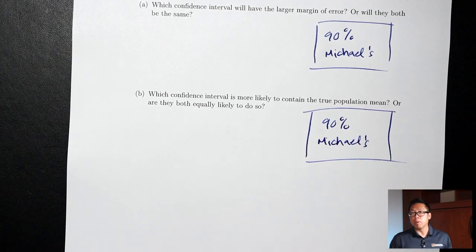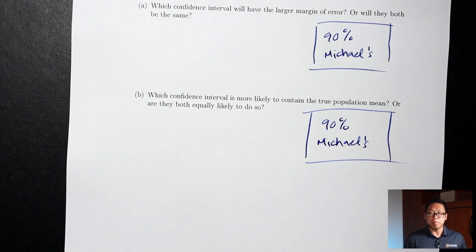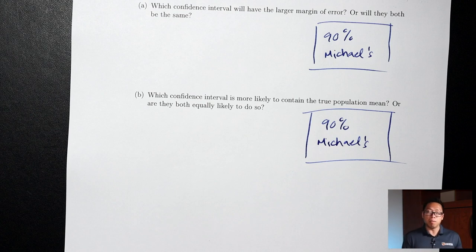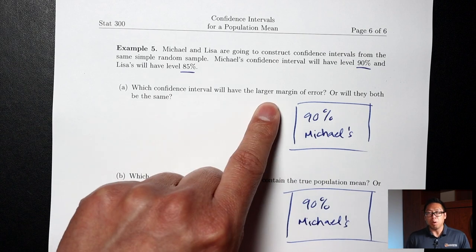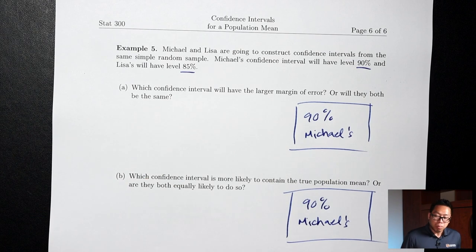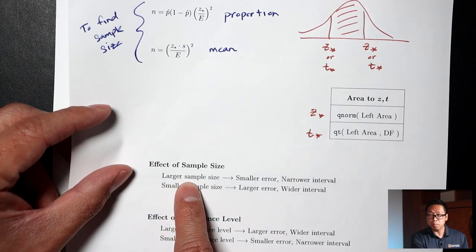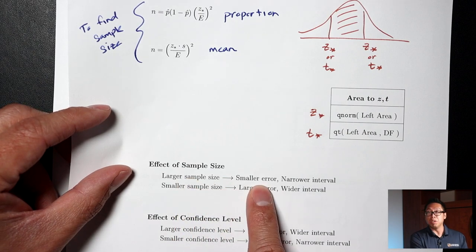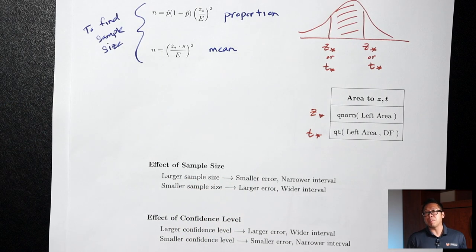The moral of the story is that a larger confidence level means you're more likely to catch the true population mean or proportion. In general, you want a higher confidence level, but the downside is a larger error. You can compensate by picking a larger sample size, which reduces the error. That's it for confidence intervals — have a great day!